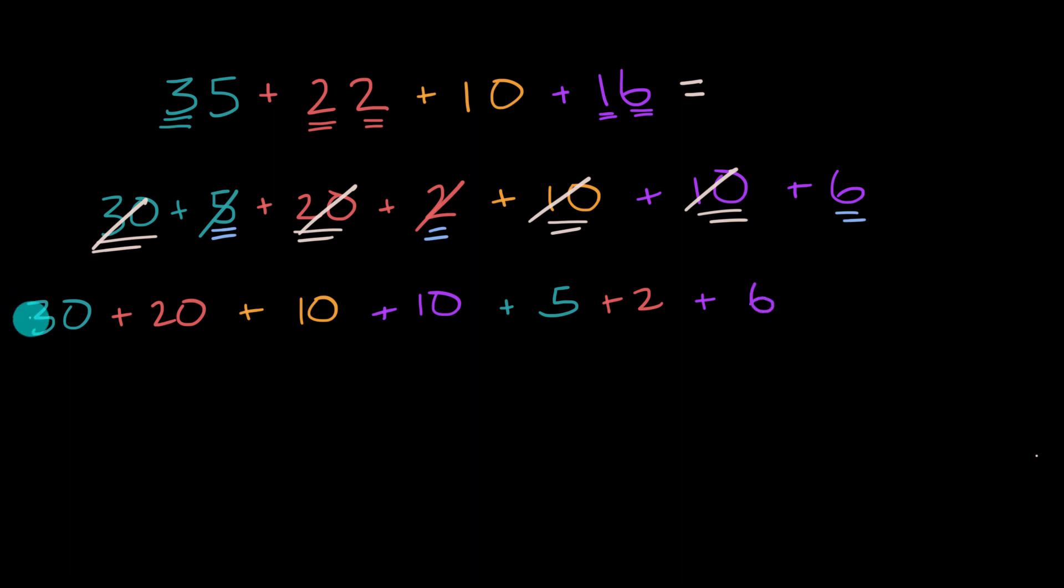And now all of these we can think about. What is 30 plus 20? Well, 30 plus 20 is going to be 50, and then 50 plus 10 is 60, and then 60 plus 10 is 70.